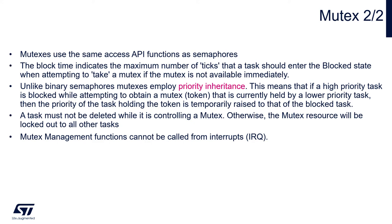A task must not be deleted while it is controlling the mutex; otherwise, the mutex resource will be locked out of all other tasks. The information about the mutex held by the task is stored within the task control block fields. This is why, when you enable mutex functionality within the operating system, the task control block size will be increased for each task immediately. Another difference versus binary semaphores is that mutex management functions cannot be called from interrupts.